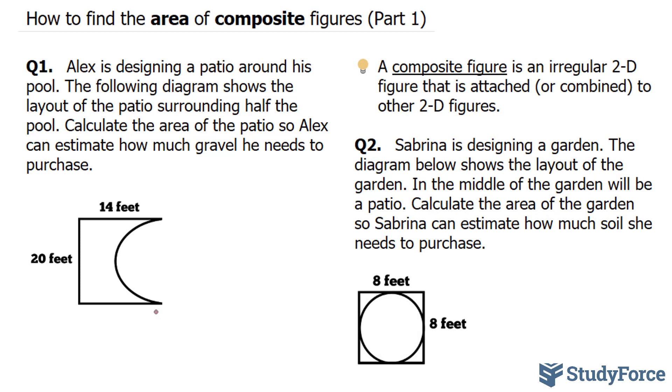The first thing that you'll notice is that this patio would look like a rectangle if this part were complete. So what we will do is find the area of the rectangle and then subtract the area of a half circle.